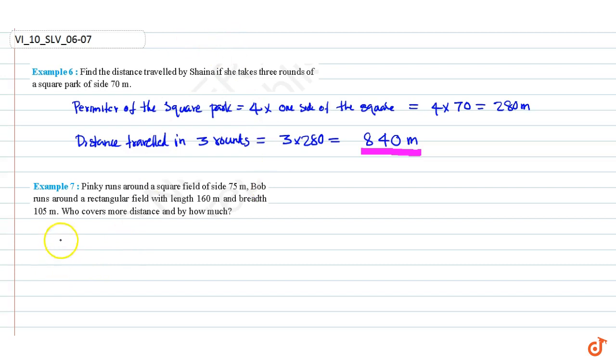We know that perimeter of the square field is equal to 4 times length of one side of the square. This is equal to 4 times 75, which equals 300 meters.